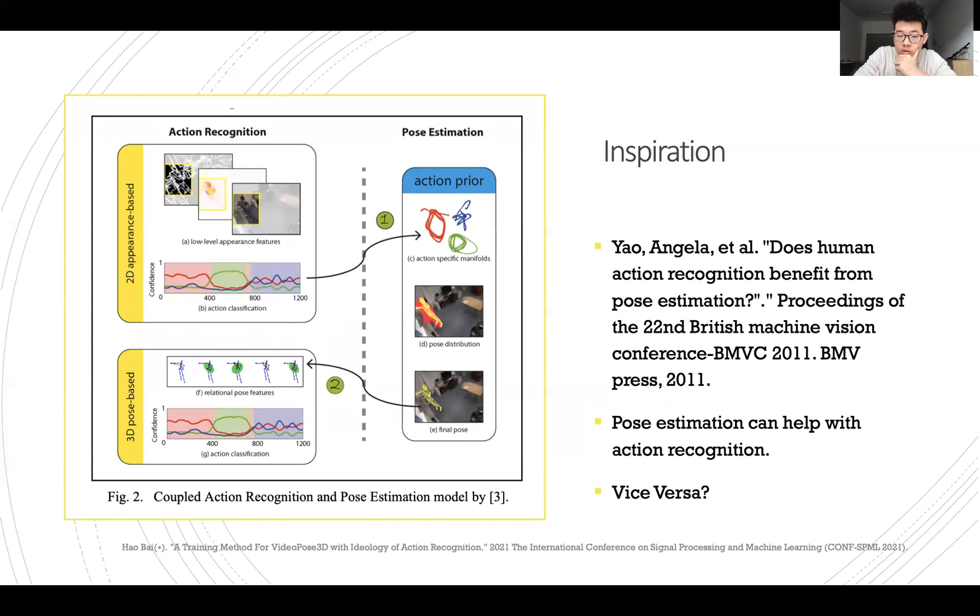How can we achieve that to make the performance a bit better, use less computing resources, and maybe improve its precision? Now comes the inspiration part. In this paper called Does Human Action Recognition Benefit from Pose Estimation, it uses the action recognition information first and passes it into the pose estimation part. It uses additional information to give back to the 3D pose-based action recognition, and it can help with action recognition. We must wonder whether we can do it vice versa—whether we can use action recognition to make pose estimation better.